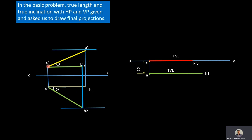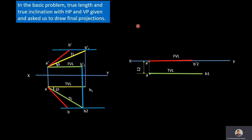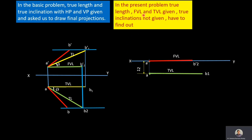With a compass, fixing one end of the front view at A', we rotate B2' toward the locus line, name this point B', and join A'B'. Similarly, fixing one end of the top view at A, we rotate B1 toward its locus line, name this point B, and join AB. In the basic problem, true length and true inclinations are given, and apparent lengths are found; those apparent lengths are then rotated toward locus lines for the final projections. In the present problem, however, true length and apparent lengths are given but true inclinations are not given.